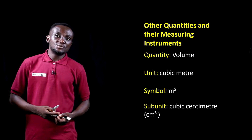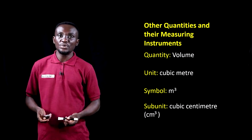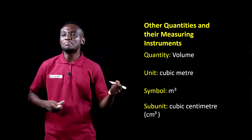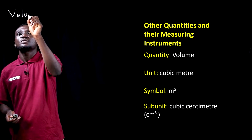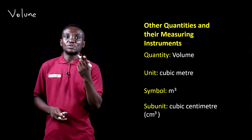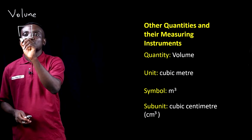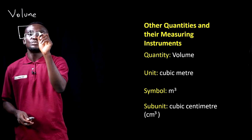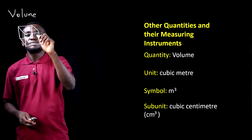The first quantity we'll be looking at here is volume. The unit for measuring volume is a cubic meter, and the symbol is meter cubed. When you have a cube and you want to measure its volume, we look at the three main sides.